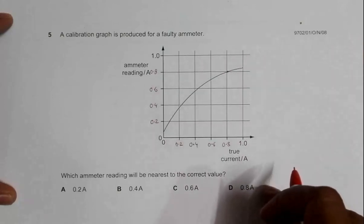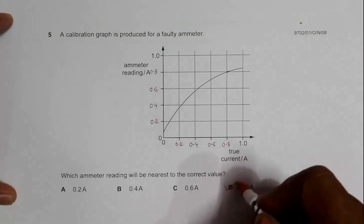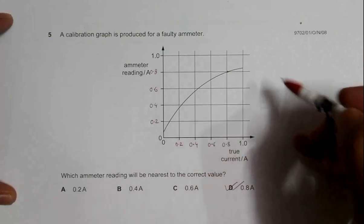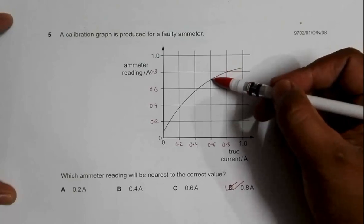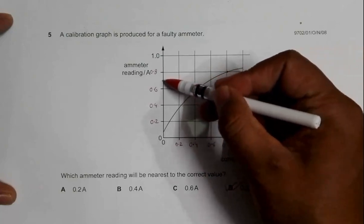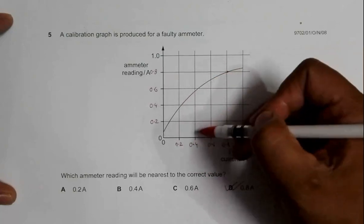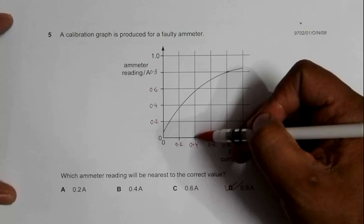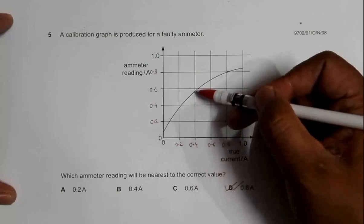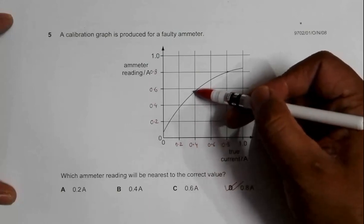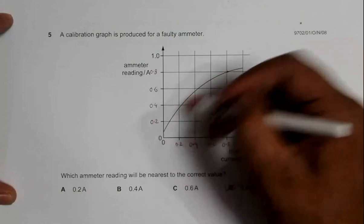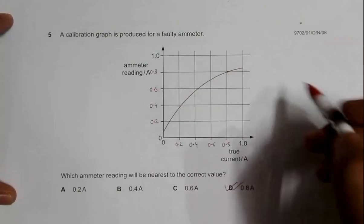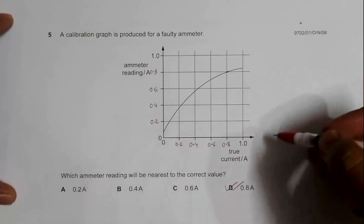If you go through other choices, they can't be correct. At 0.6, the true current is 0.6 but the ammeter reading is 0.7. At 0.4 true current, the ammeter reading is slightly less than 0.6. Everywhere else is the same case. So the only correct answer is choice D.